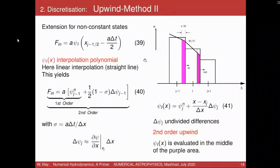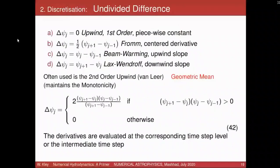The point is this: if we had chosen a steeper slope at point j, there would be a jump — a discontinuity at that point. This scheme does not create such discontinuities. Now I show you some examples of how these different schemes behave in the numerical solution.